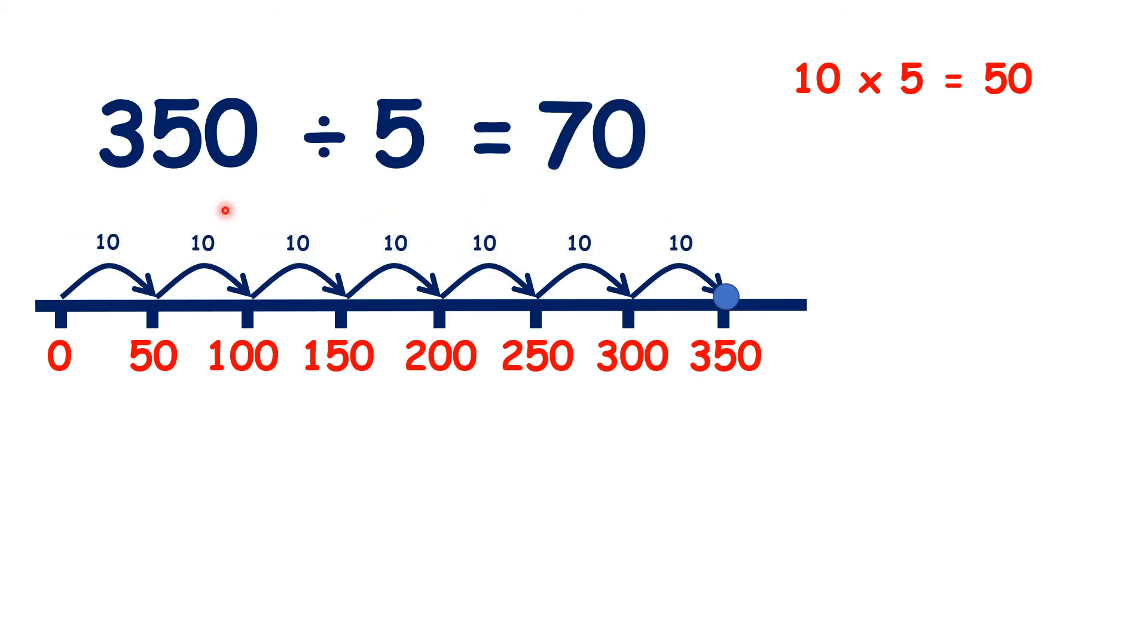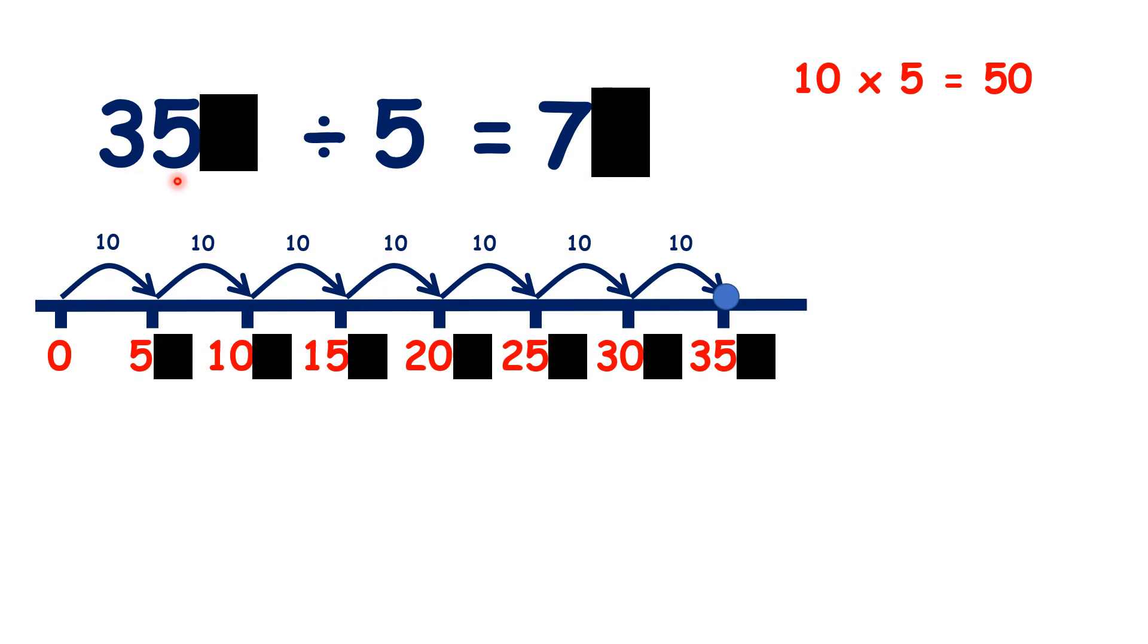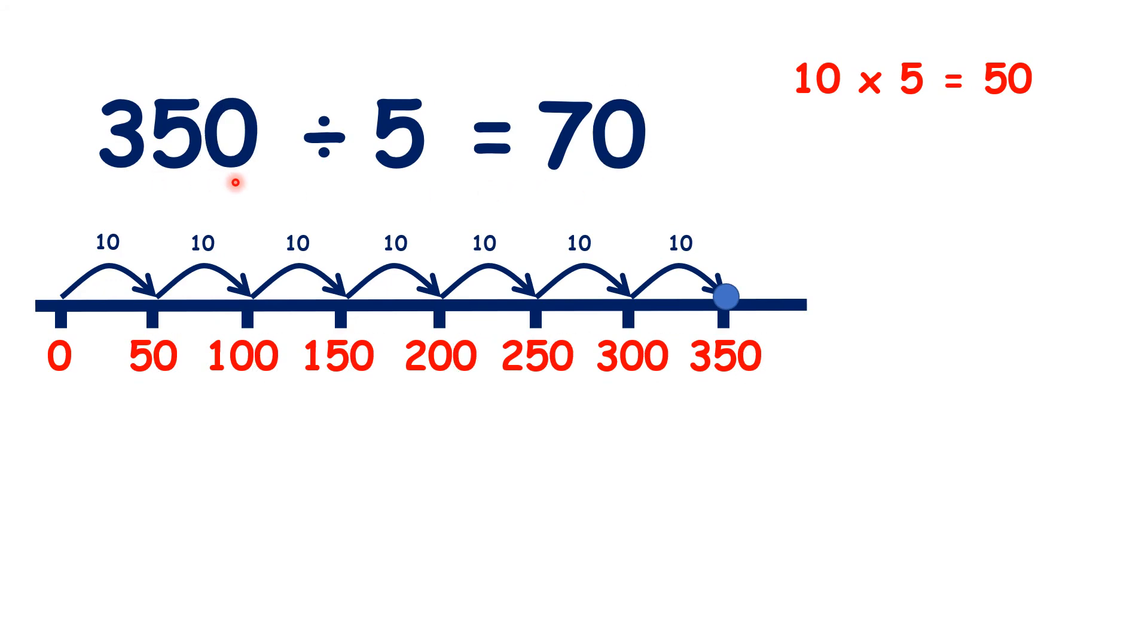But we don't really need to use a number line, because if we know that 35 divided by 5 is 7, we know that 350 divided by 5 is 70.